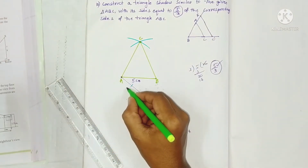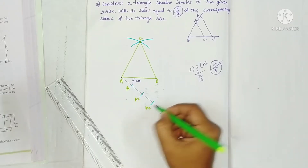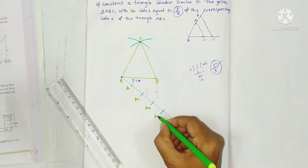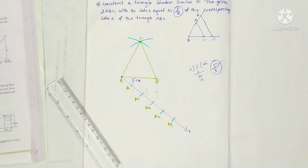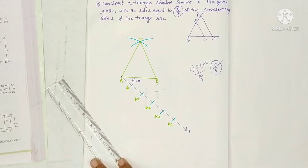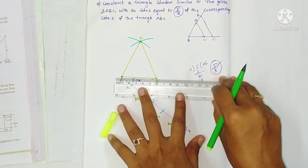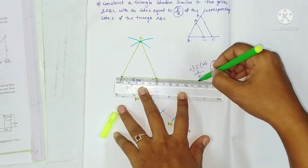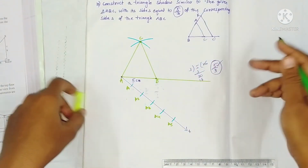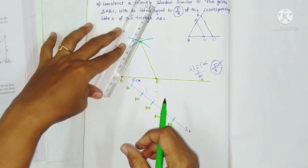So I locate 5 points: A1, A2, A3, A4, A5. Now we want to extend AB, and similarly extend AC also.